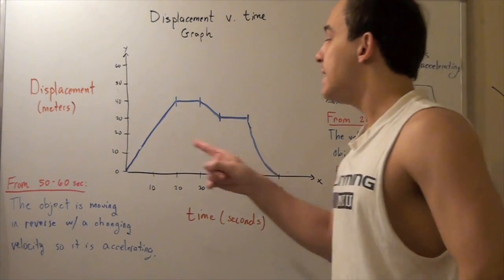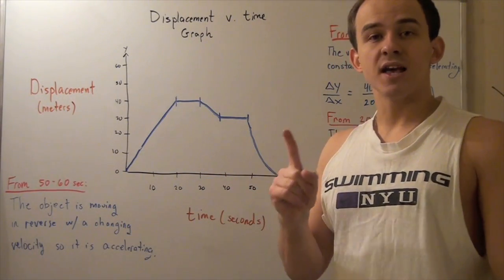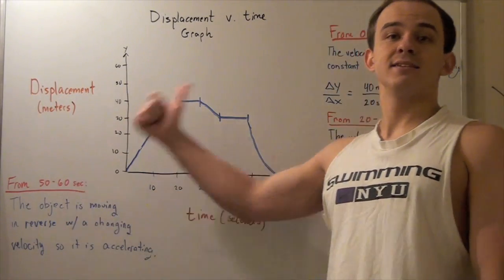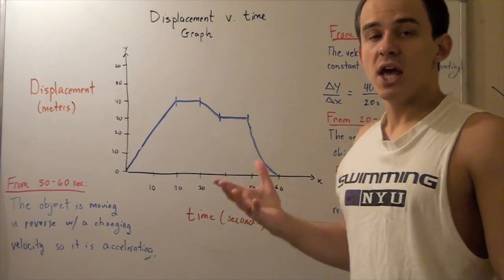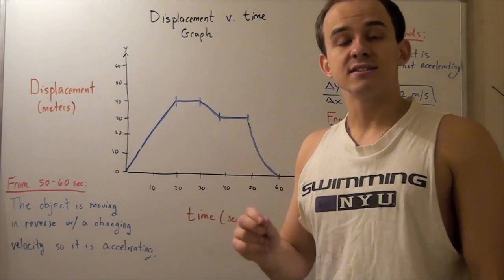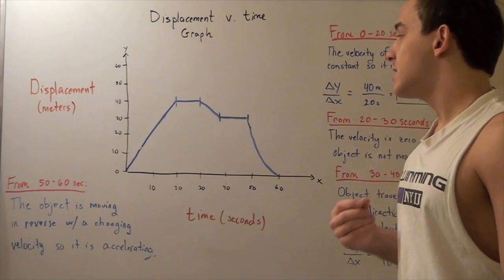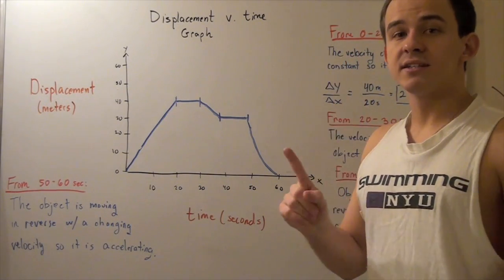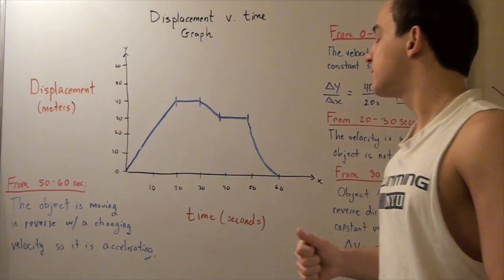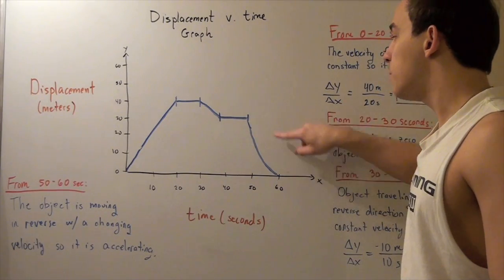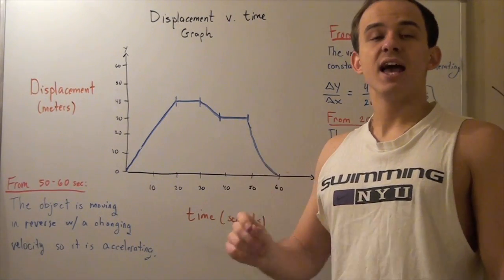To recap: a positive constant slope means velocity is constant, so the object is not accelerating and is moving in the positive direction. A straight line with a slope of zero means the object is not moving — no velocity, no acceleration. A negative constant slope means the object moves with constant velocity in the reverse direction, so it's not accelerating. A changing slope means instantaneous velocity is changing at every given point in time, so the object is in fact accelerating.